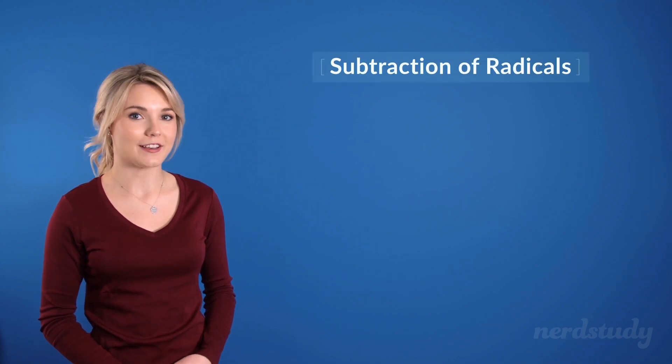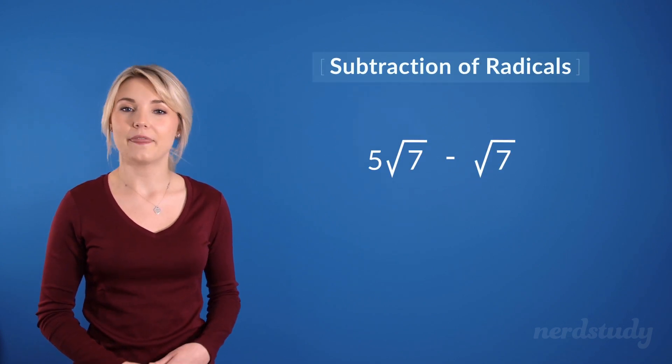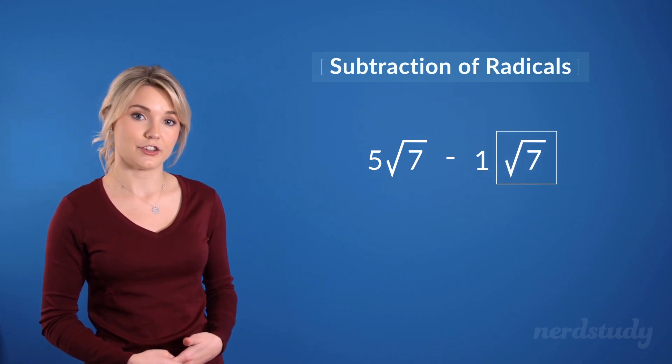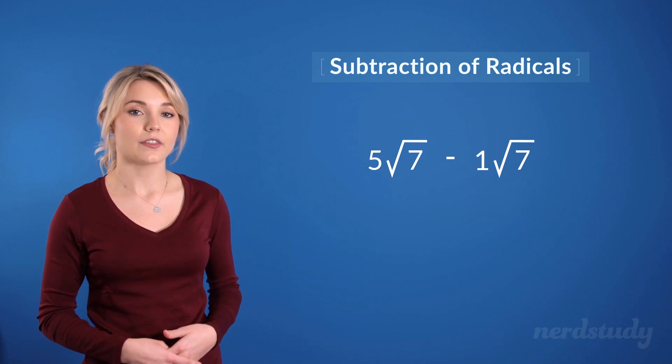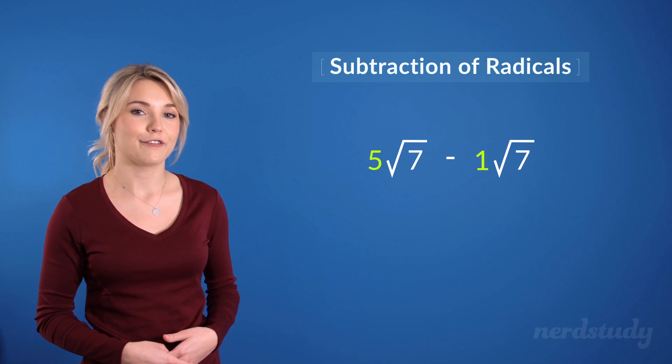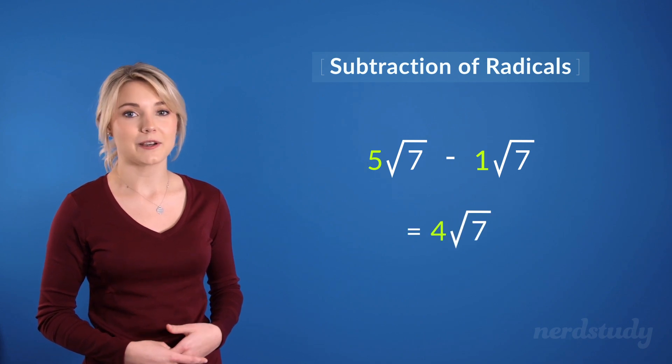Now let's try a question where there's a subtraction between two radicals. So we know that this root 7 is being multiplied by 1 making it its coefficient. So we just subtract the coefficients of 5 and 1 together to get a final answer of 4 root 7. That's pretty simple as well.